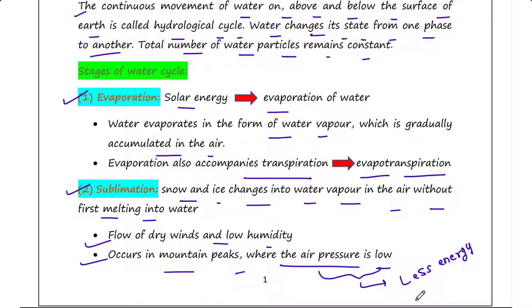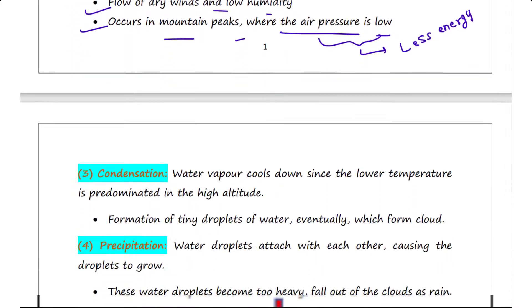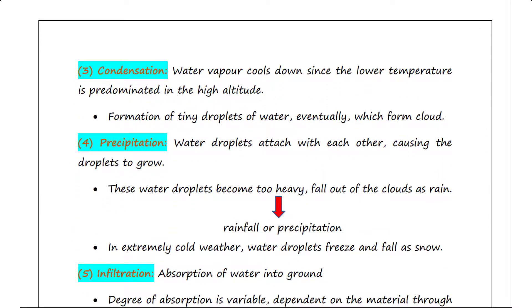Next process is condensation. The water vapor that is accumulated in the air gradually cools down since the lower temperature is predominated in the high altitude. Condensation of water leads to the formation of tiny droplets of water, eventually which form clouds.